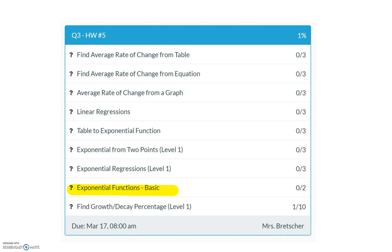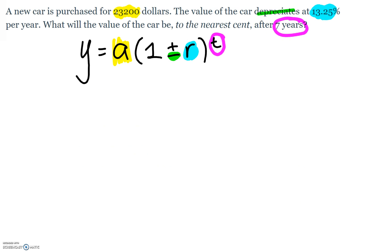And then the last one that we're going to do was from Friday's lesson, Exponential Functions Basic. So a new car is purchased for $23,200. The value of the car depreciates at a rate of 13.25% per year. What will be the value of the car to the nearest cent after 7 years?